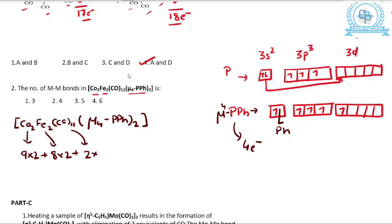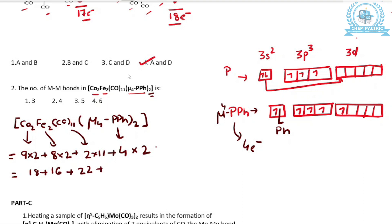Each CO is a 2-electron donor and there are 11 of them. The μ4-PPH ligand is a 4-electron donor. Adding up: 18 (Co) + 16 (Fe) + 22 (11 CO) + 4 (μ4-PPH) + 4 (2 bridging CO × 2) = 64 total electrons.